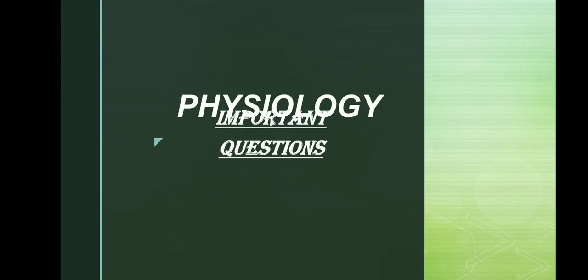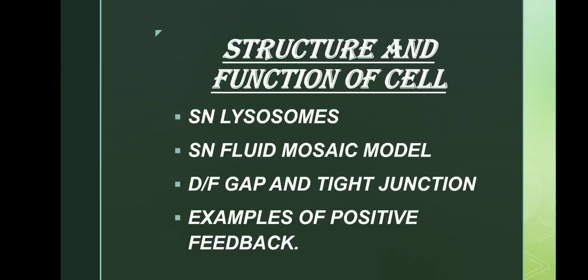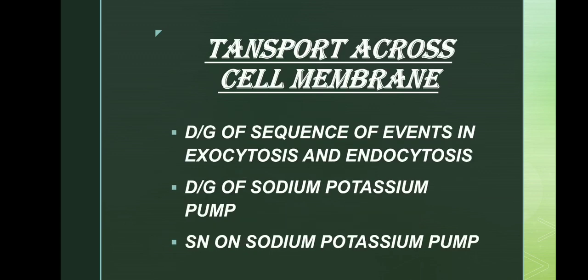The first chapter encountered in general physiology is structure and function of cell. From this chapter, short note on lysosome, short note on fluid mosaic model, differences between gap and tight junction are important questions. Example of positive feedback regulation is also an important question.